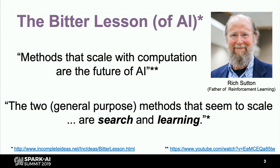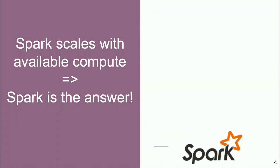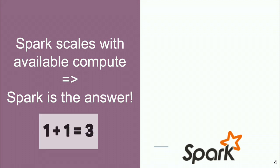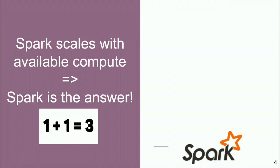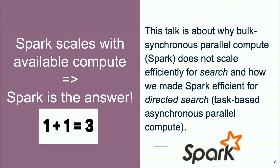At the Spark conference, we talk about scaling compute. You probably think Spark scales with available compute, so Spark is the answer. It's not the complete answer — it's partially the answer — but it's not the answer for search. The problem with Spark for search is its computational model: bulk synchronous parallel computing, which doesn't work particularly well with searching. That's basically what this talk is about.